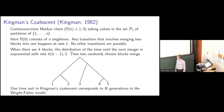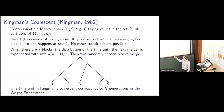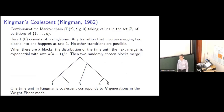What this calculation suggests is that if we take a sample of lowercase n individuals from the Wright-Fisher model and trace back their ancestral lines, the genealogy should be described by a process called Kingman's Coalescent, in which each pair of lineages merges at rate one. Kingman's Coalescent was introduced in 1982. Formally, it's a continuous time Markov chain that takes its values in the set of partitions of the integers one through N.